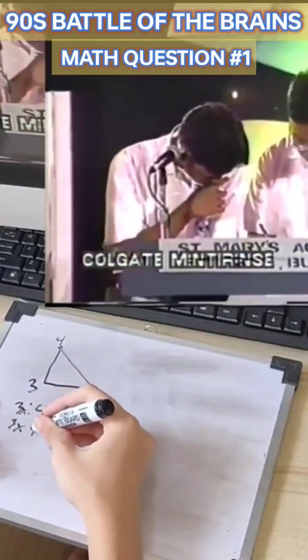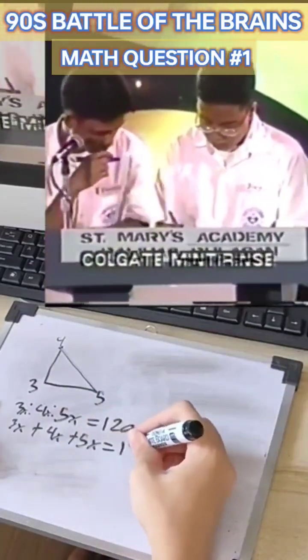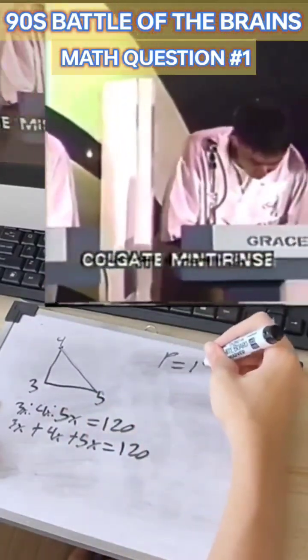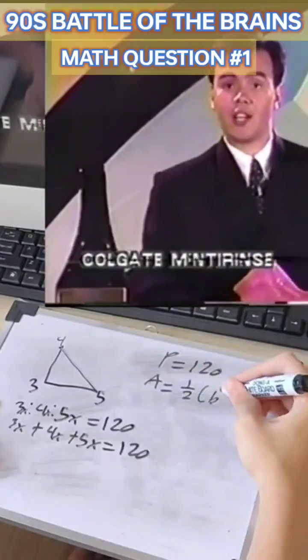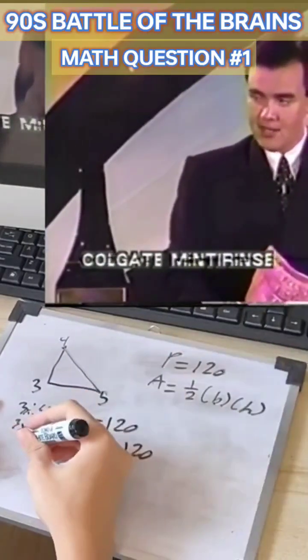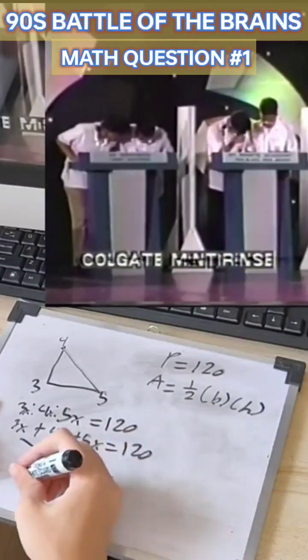Once more, mathematics for 30 seconds. The three sides of a triangular lot are in the ratio of 3 to 4 to 5. Now, if its perimeter is 120 meters, what is its area in square meters? It's mathematics, so we'll give you 30 seconds to answer that problem.